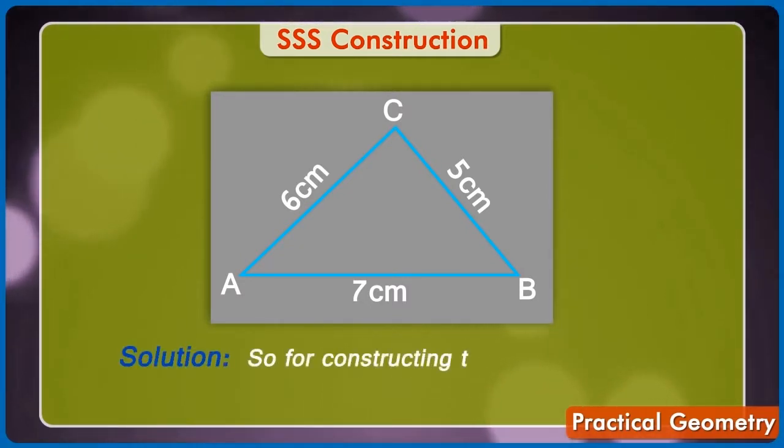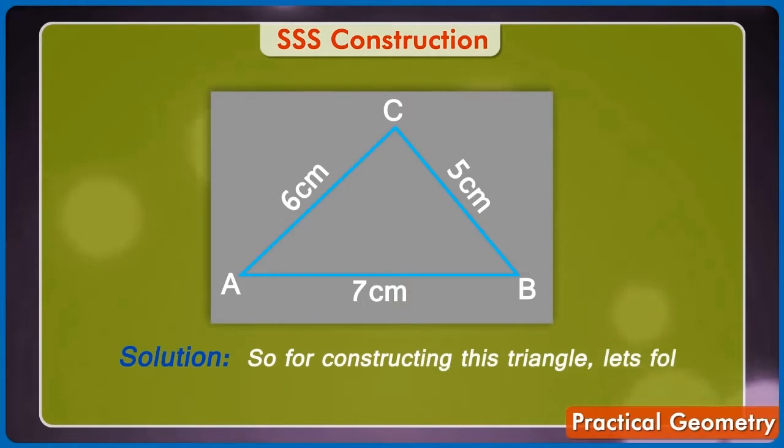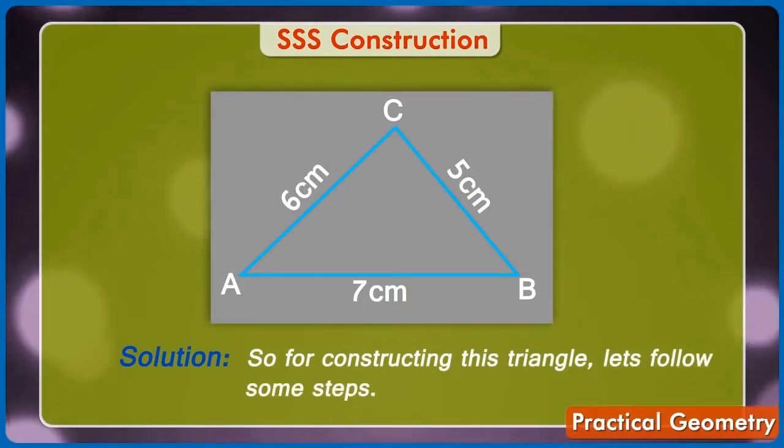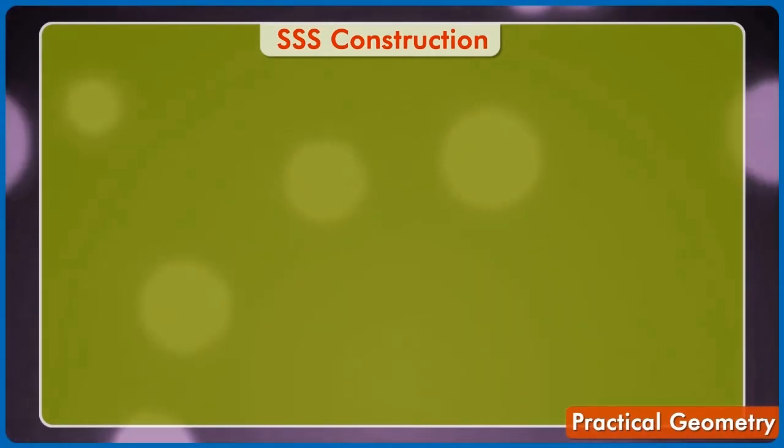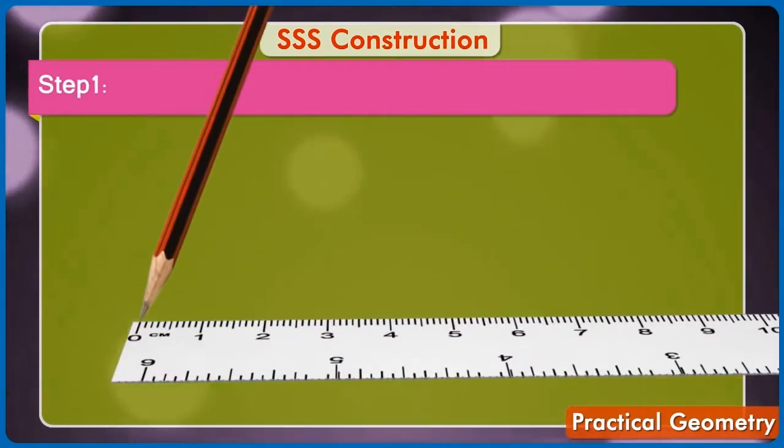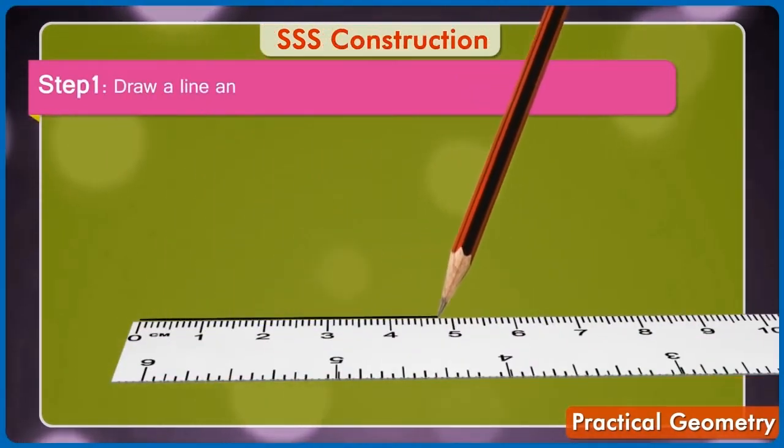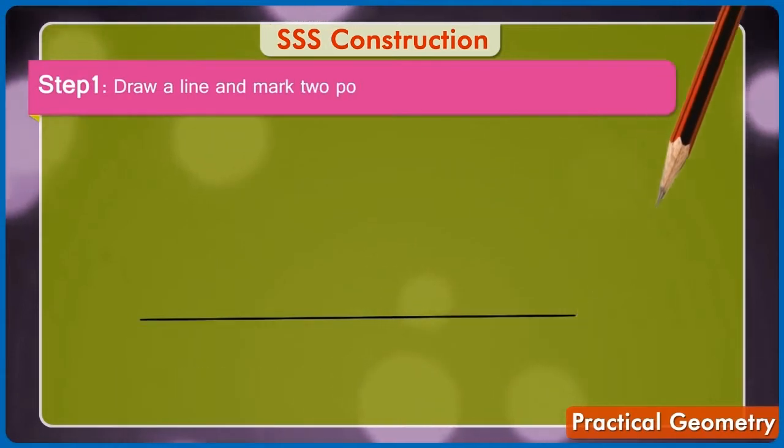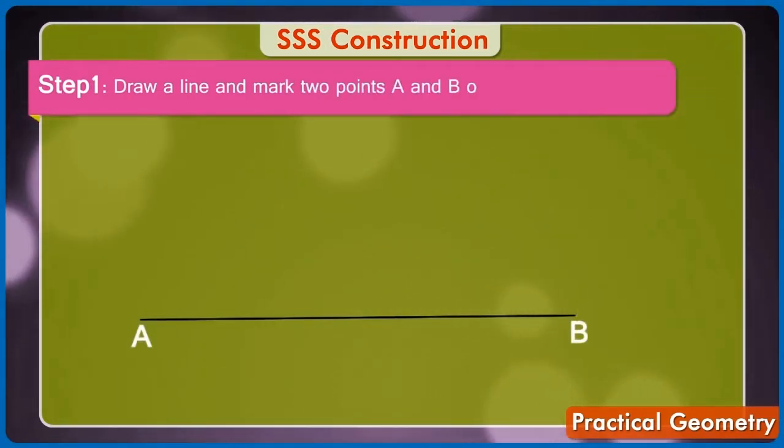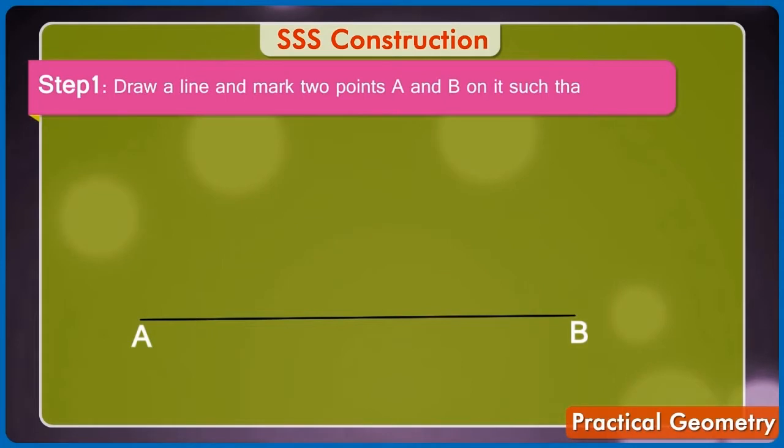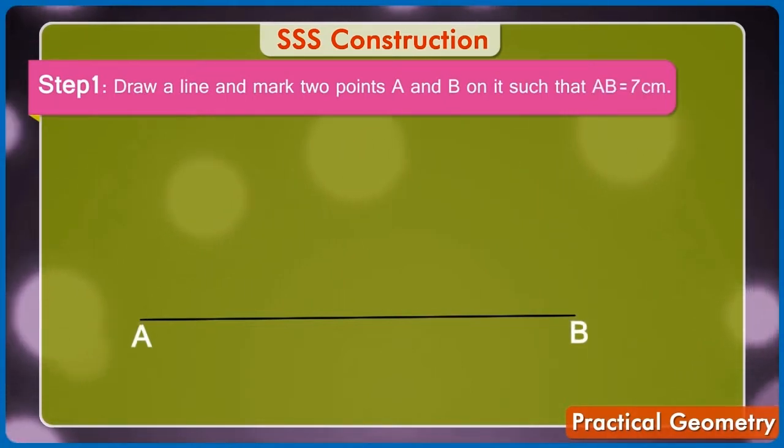Solution. So, for constructing this triangle, let's follow some steps. Step 1: Draw a line and mark two points A and B on it such that AB is equal to 7 cm.